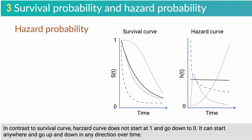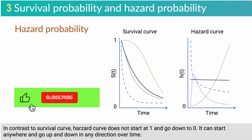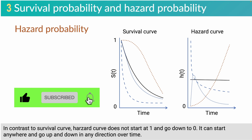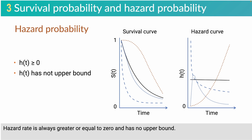Hazard function is instantaneous potential per unit of time. In contrast to the survival curve, hazard curves do not start at 1 and go down to 0. They can start anywhere and go up and down in any direction over time. Hazard rate is always greater than or equal to 0 and has no upper bound.